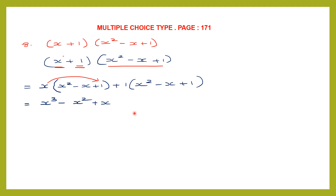Now we have to multiply 1 into the whole trinomial. 1 into anything gives us back the same thing, so we can write the same trinomial as it is: plus x squared minus x plus 1.